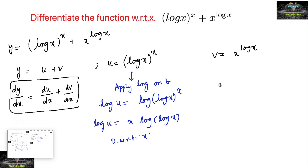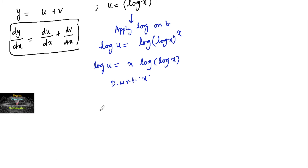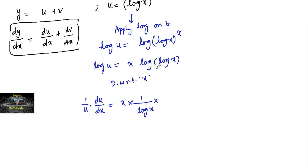We have 1/u times du/dx equal to x times, applying the product rule: d/dx of log(log x), which is 1/(log x) times 1/x, plus log(log x) times d/dx of x, which is 1.